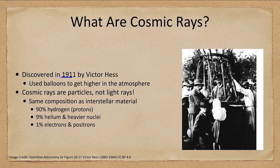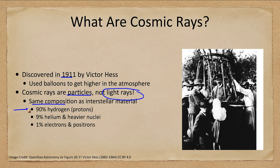To emphasize, these are particles — they are not light rays — and they have a similar composition to interstellar material. They are mostly hydrogen, meaning individual protons traveling through space, with a little bit of helium and heavier nuclei, and a small fraction are electrons and positrons.